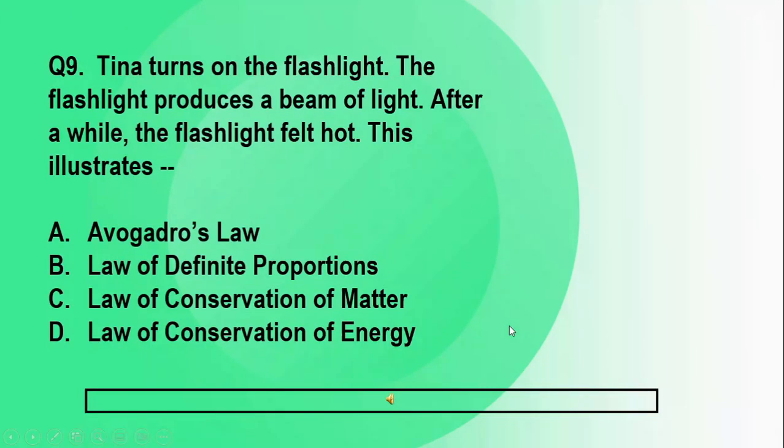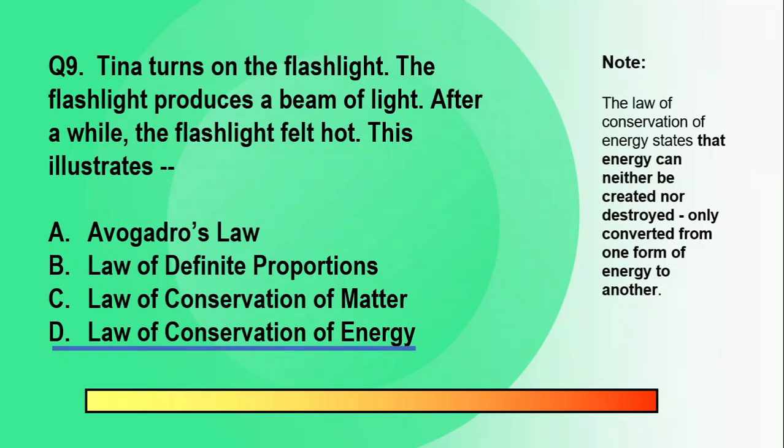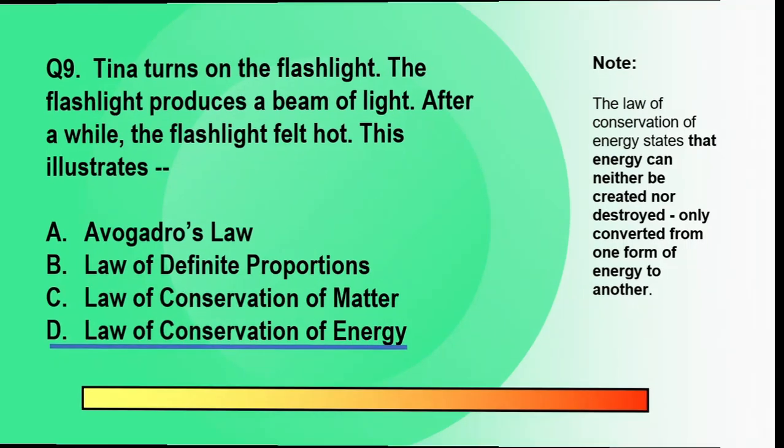Let's go to question number nine. Tina turns on the flashlight. The flashlight produces a beam of light. After a while, the flashlight felt hot. This illustrates A. Avogadro's Law. B. Law of Definite Proportions. C. Law of Conservation of Matter. D. Law of Conservation of Energy. The correct answer is letter D, Law of Conservation of Energy. The law of conservation of energy states that energy can neither be created nor destroyed. It is only converted from one form of energy to another. So in this case, when Tina turned on the flashlight, the chemical energy in the batteries is transformed to light energy and heat energy.